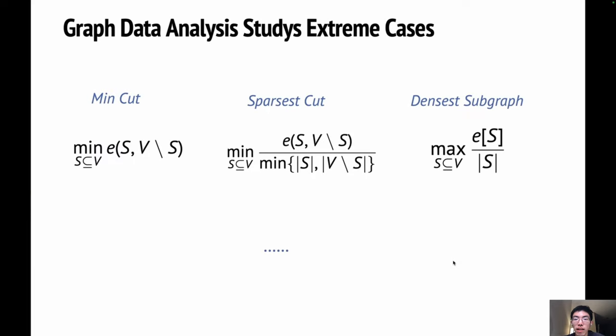A lot of graph data analysis is built upon analyzing extreme cases of graphs. For example, people have extensively researched the min cut, the sparsest cut, the densest subgraph, and many other problems which all involve finding some kind of extreme information on graphs. However, they usually provide limited information.